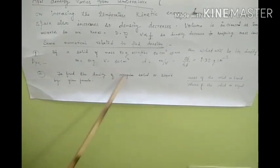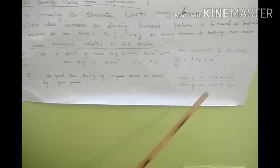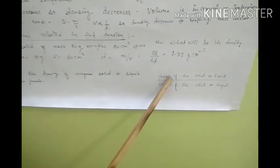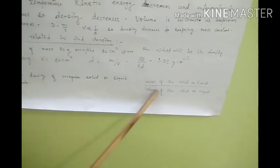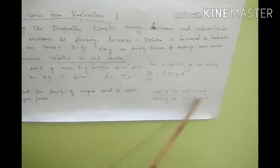And the density of irregular solid or liquid can be found easily with the help of mass of the solid or liquid and volume of the solid or liquid. Bye for now.